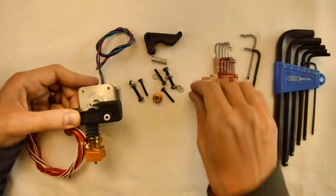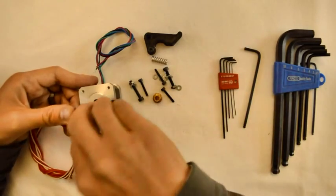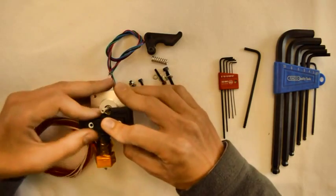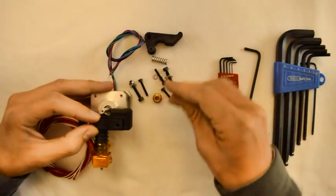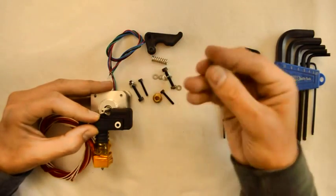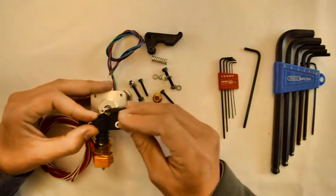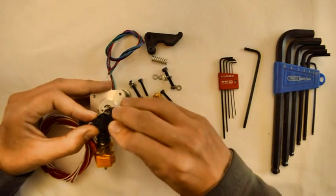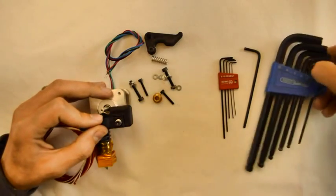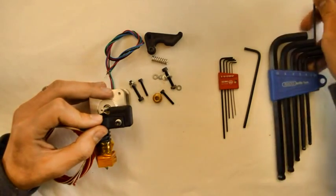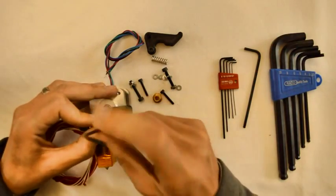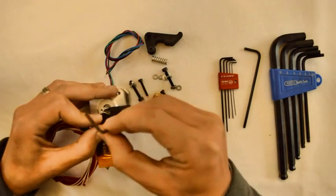We'll use two M3 washers for the screws and then the M3 screws goes right through to the bottom. And we'll use the 2.5 size Allen key to tighten these down.